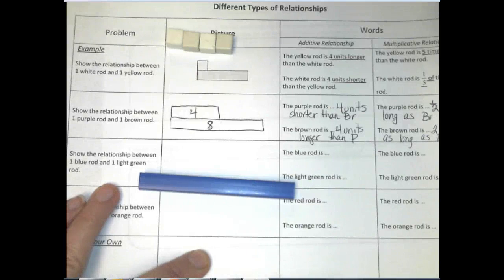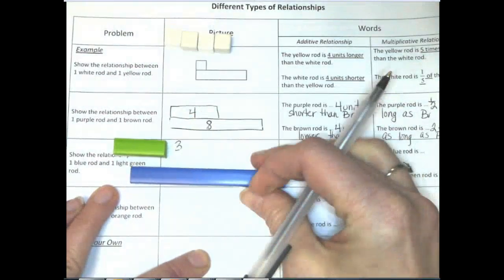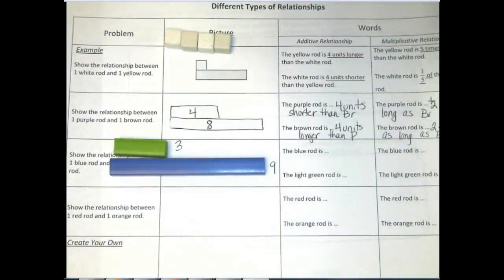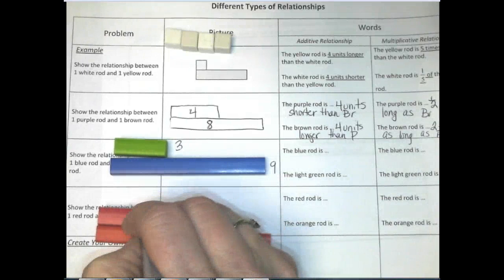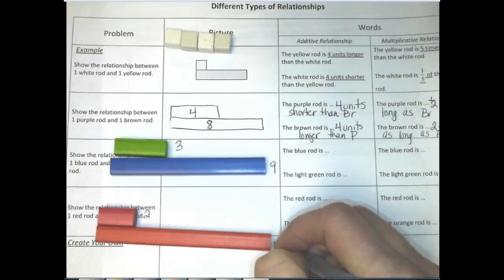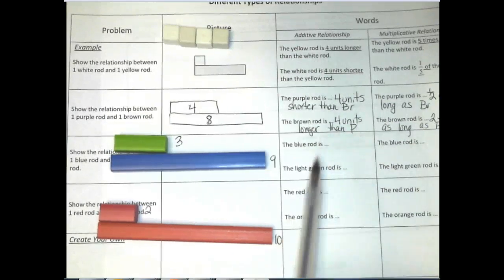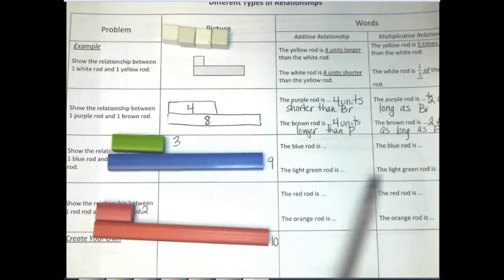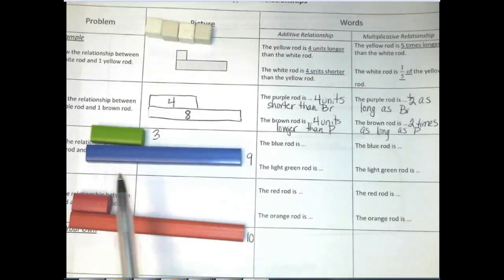A blue looks like this, and a light green looks like this, and I'm going to write those relationships beside it. A light green is worth three, and a blue is worth nine. They want to know the relationship between a red and an orange. The red is worth two units, and the orange is worth ten units. Pause your video and see if you can work through the additive thinking and the multiplicative thinking, and then come back and check your answers.